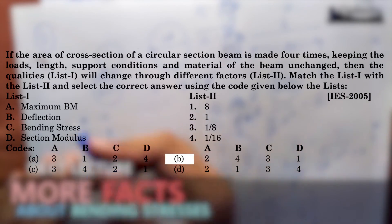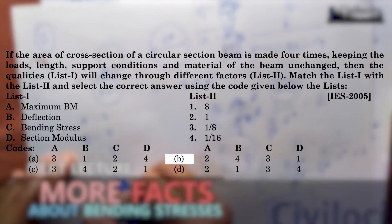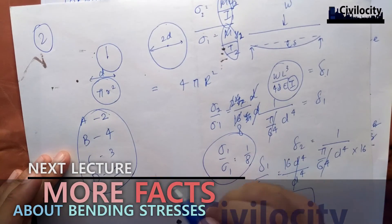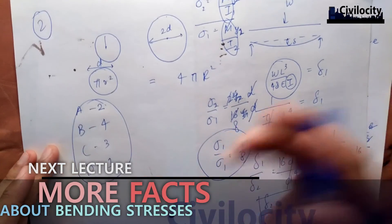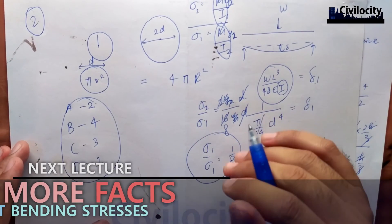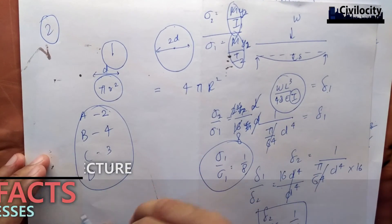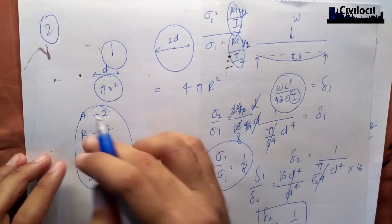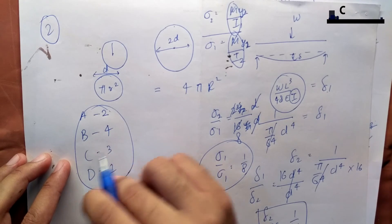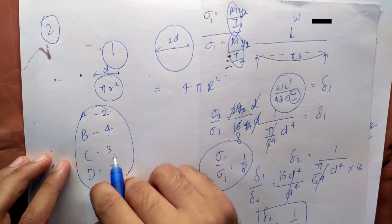C comes with the third option, and D comes with the first. So the final answers are: A maps to 2, B maps to 4, C maps to 3, and D maps to 1. If you haven't understood, please go back and read it again. This is the correct option. Now let's move on to the next question.